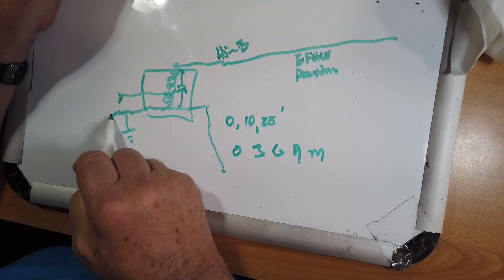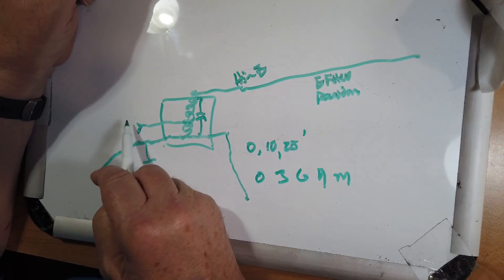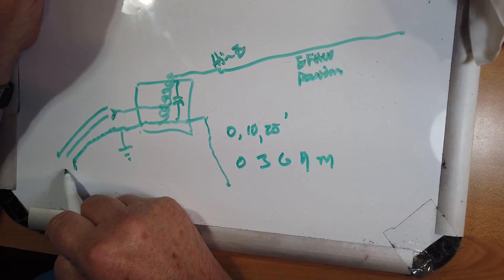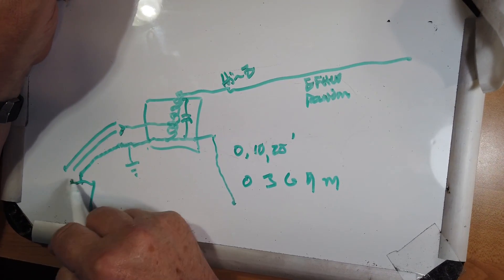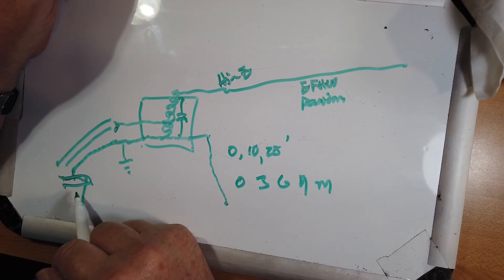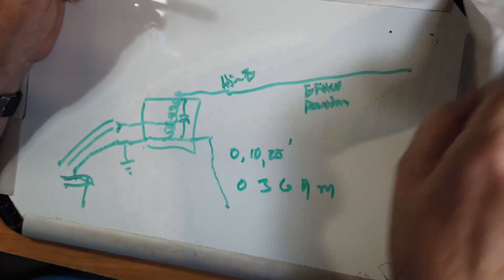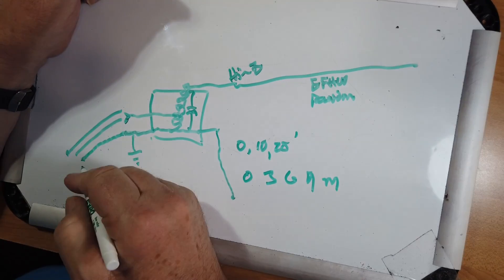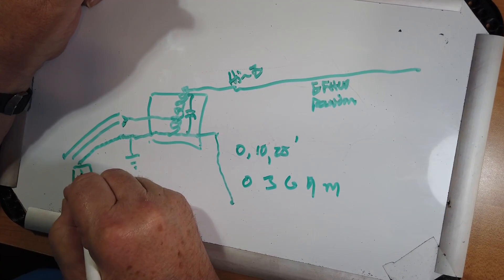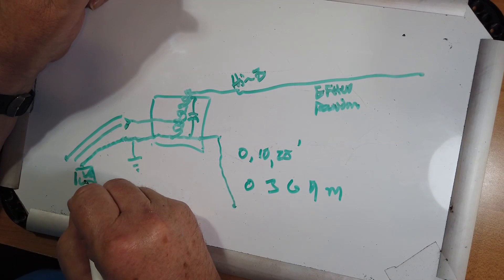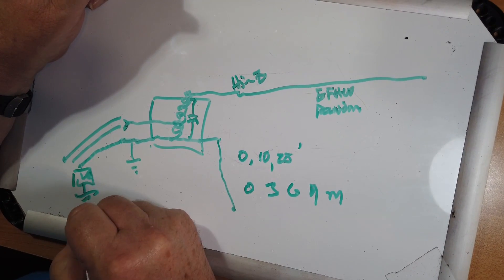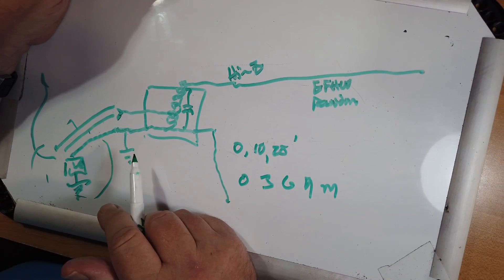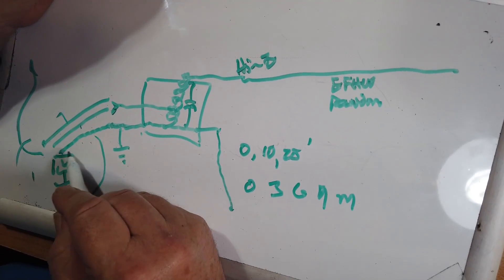Now note that this part of the coax comes down, and the shield should be grounded at your ground rod. I'm drawing a ground rod wrong. You have a lightning arrestor, and then your ground rod here, and then this goes into the shack. This is extremely important.